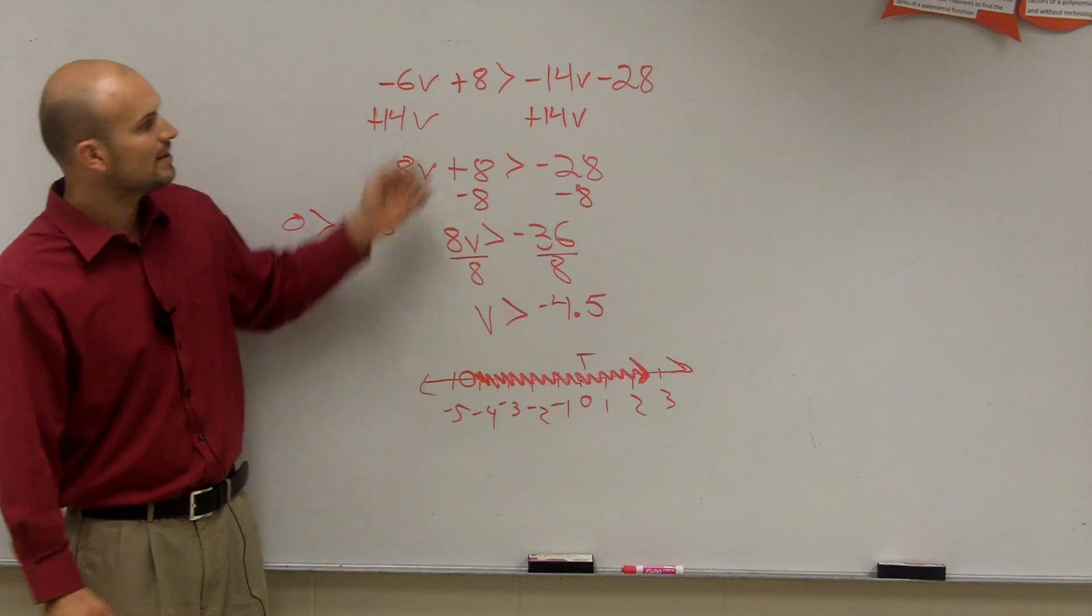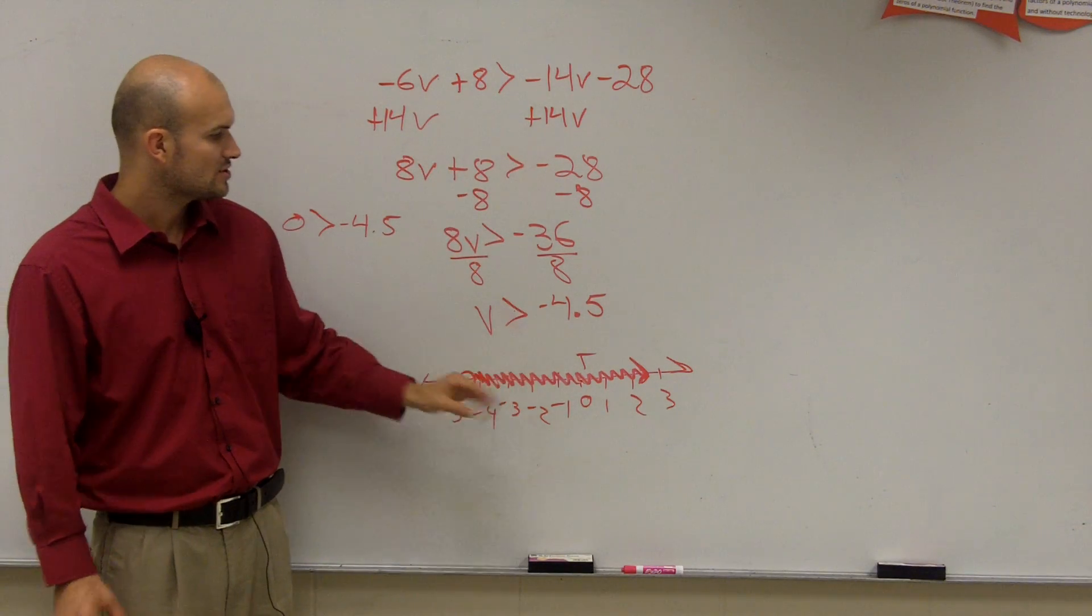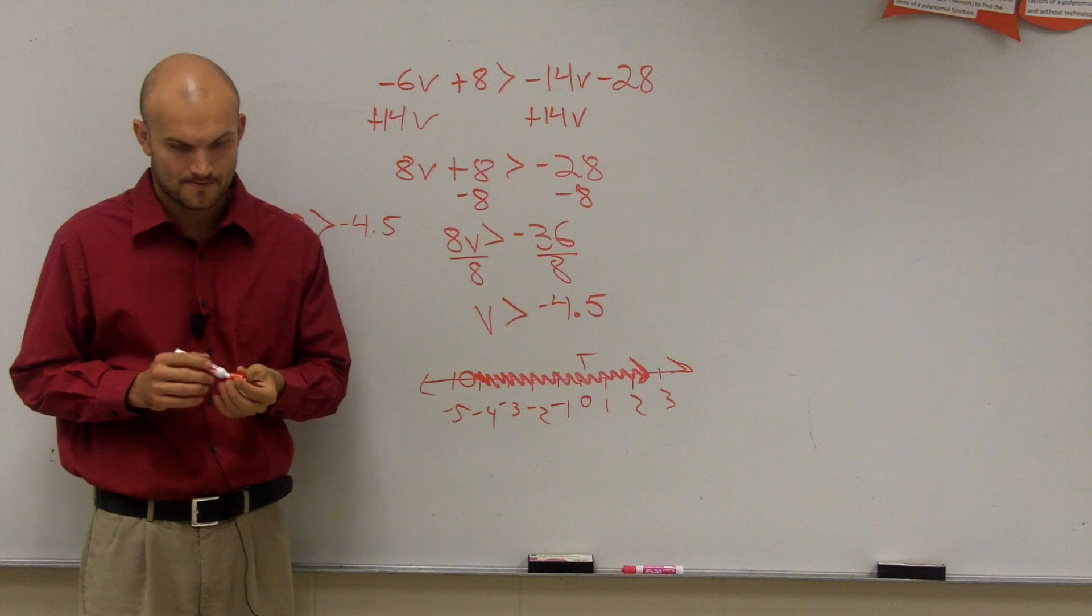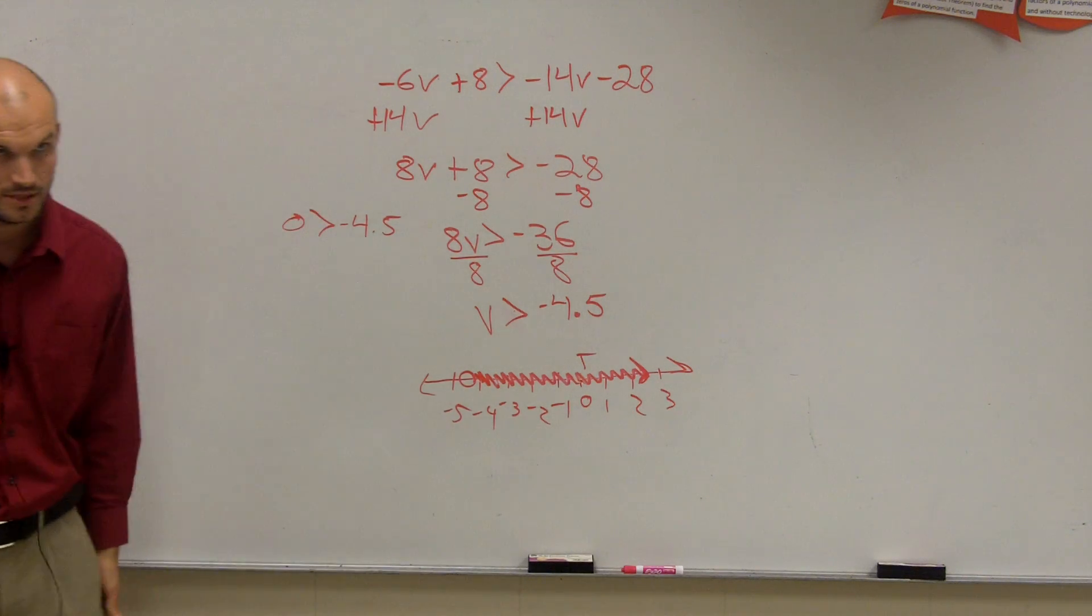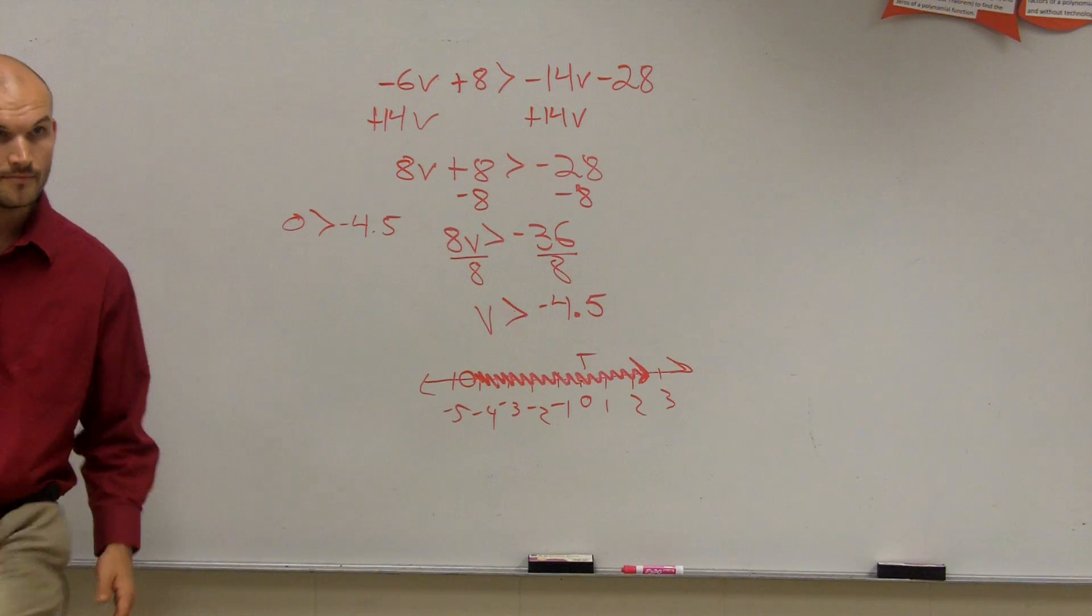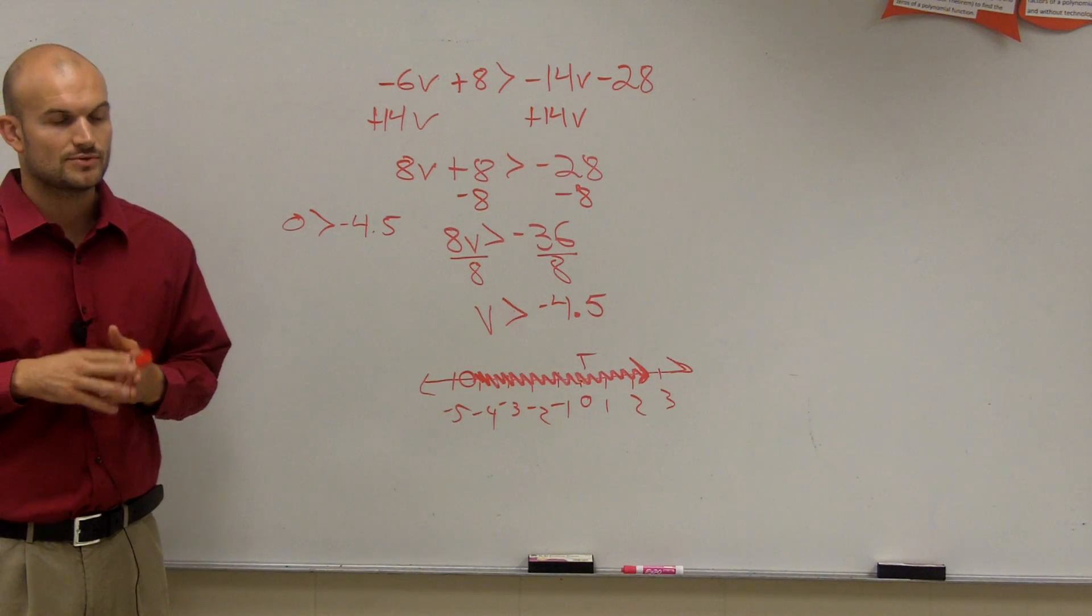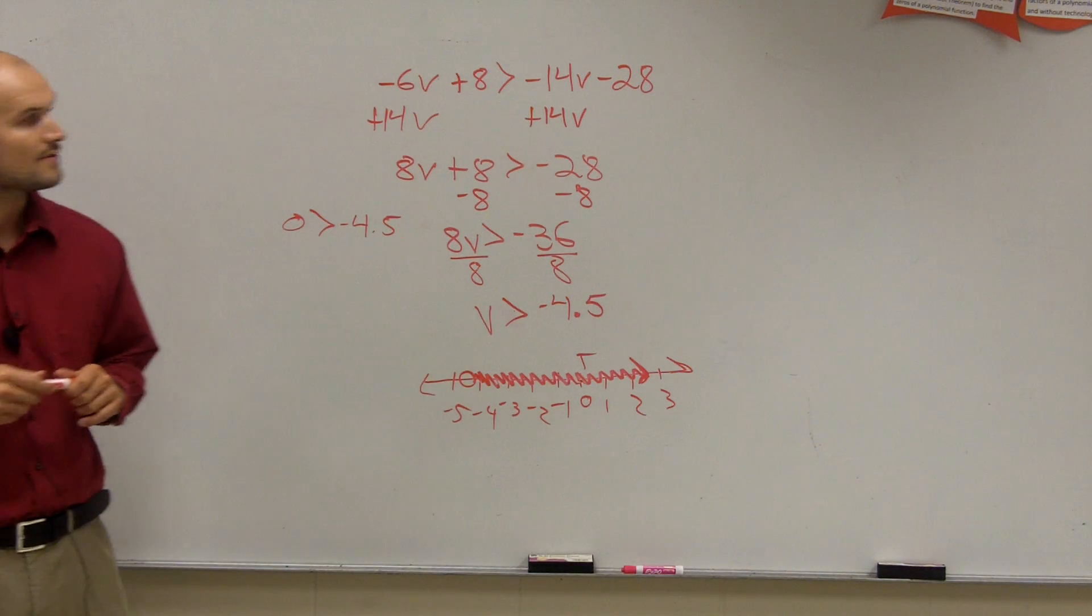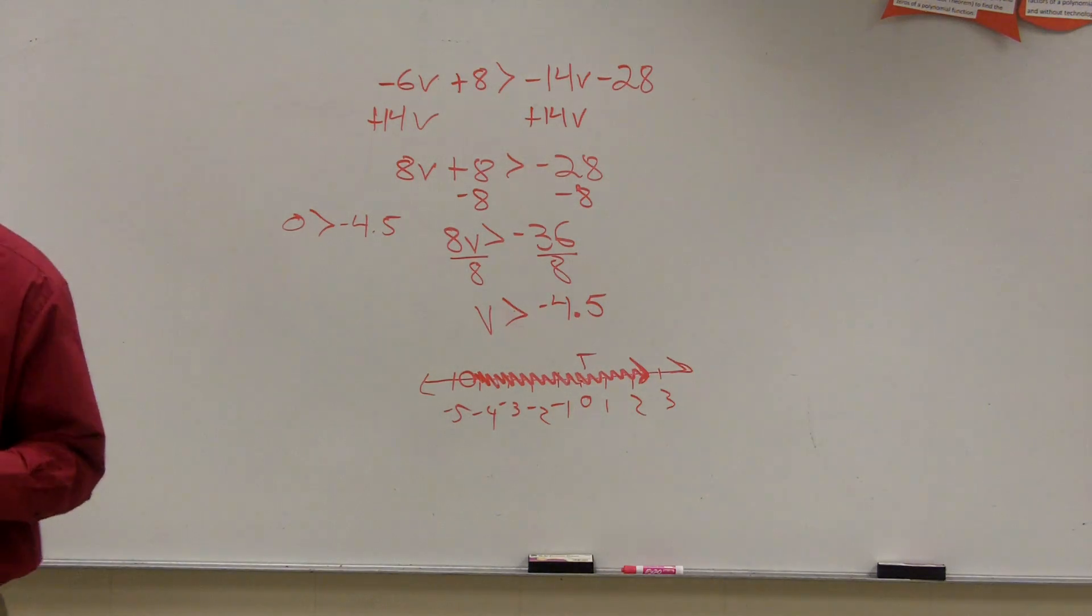All right? The difficult thing about this is make sure you get it to your variable, solve, and shade. Okay? Any questions? Yes? Only switch when you multiply or divide by negative. Yes. Cool? Okay.